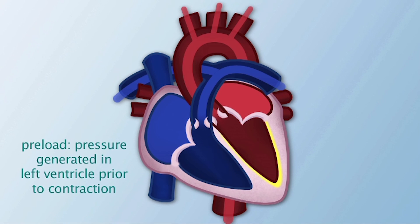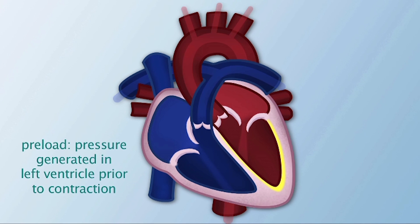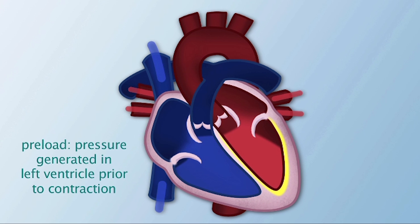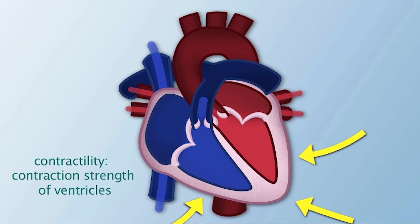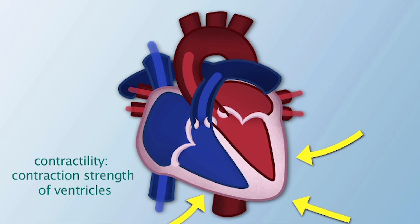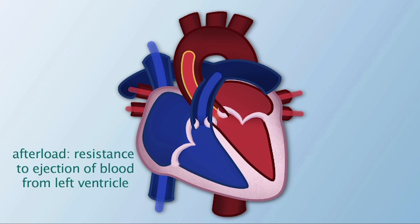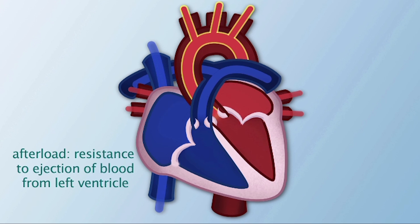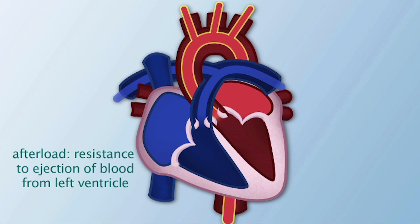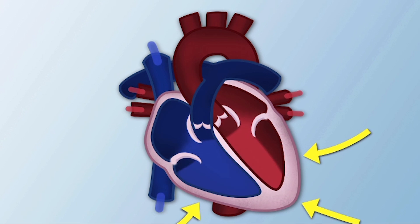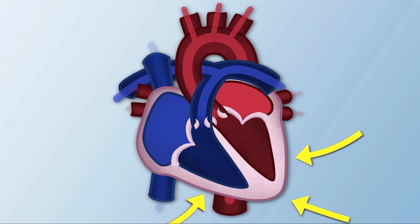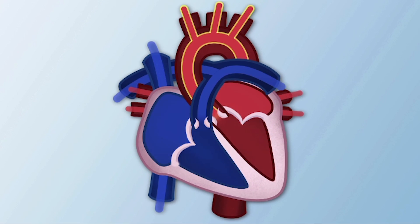Preload is the pressure generated in the left ventricle prior to contraction. Contractility is the strength of the contraction of the ventricles. Afterload is the resistance to ejection of blood from the left ventricle. Efforts to maximize all these factors will improve cardiac output in the post-operative patient.